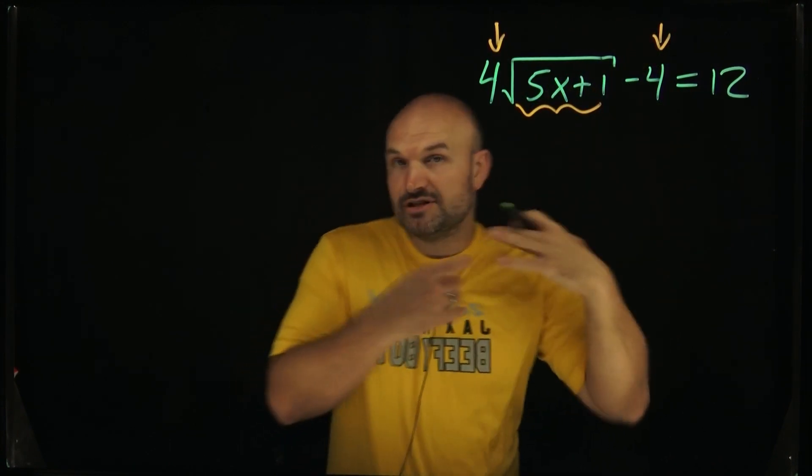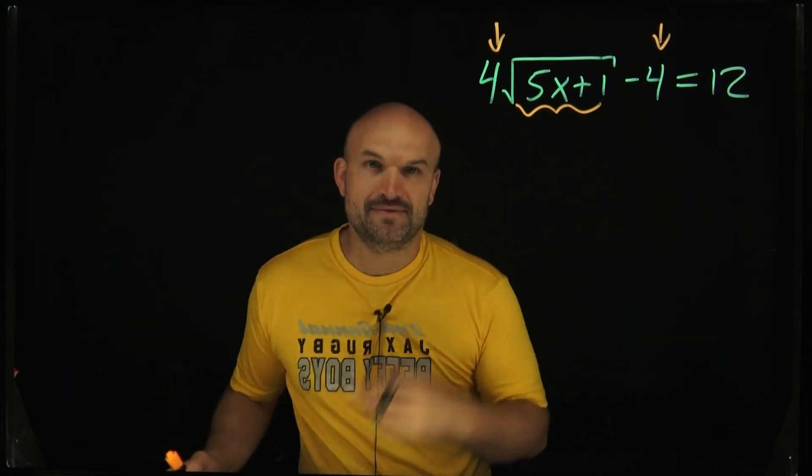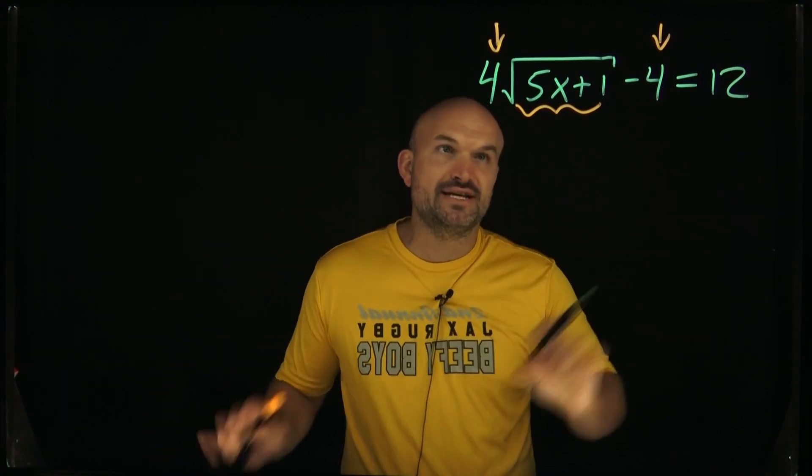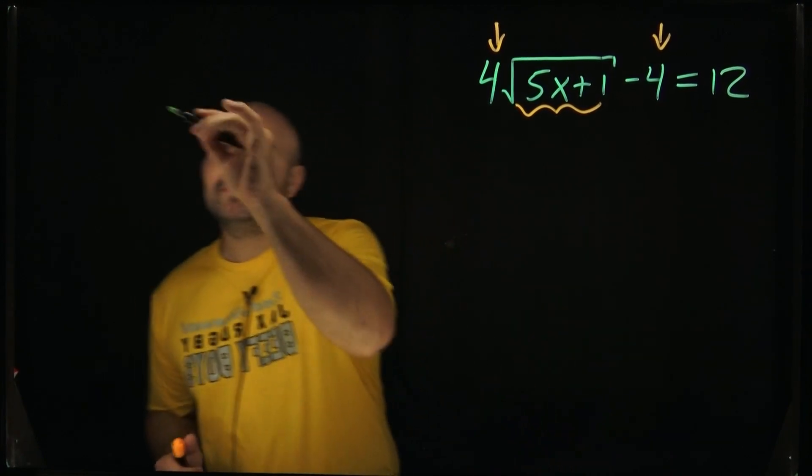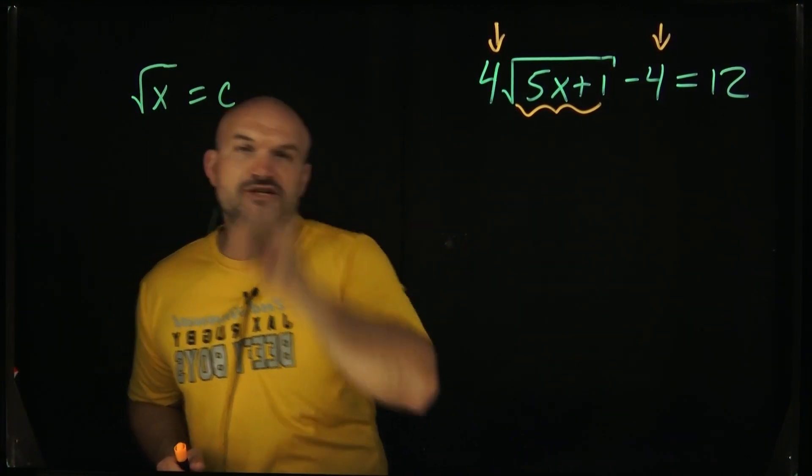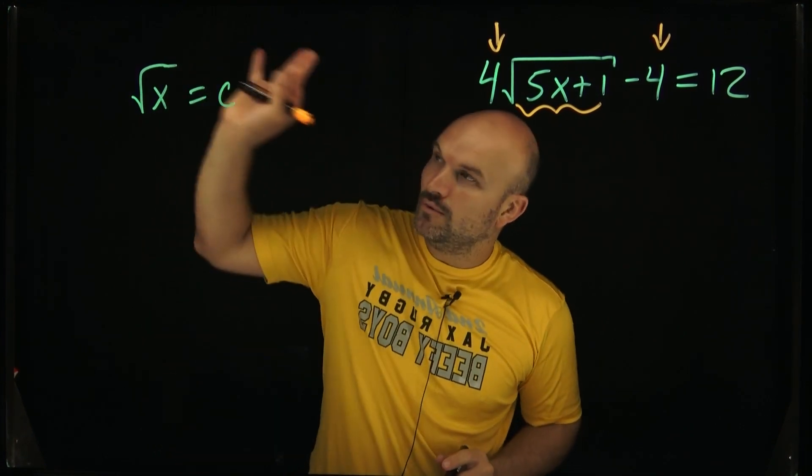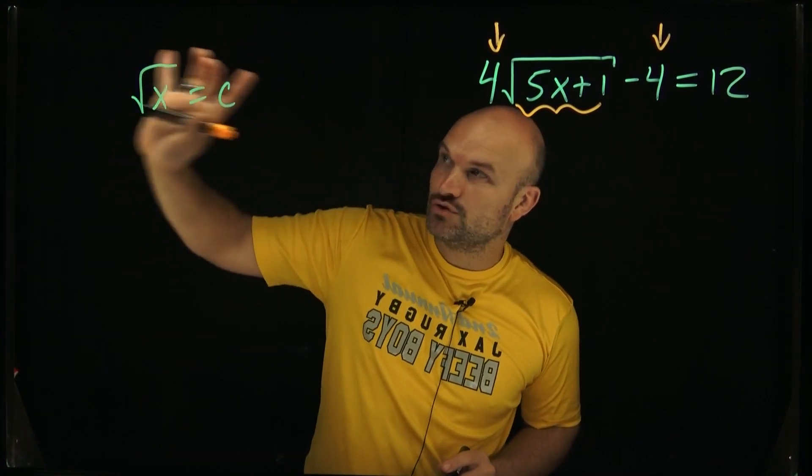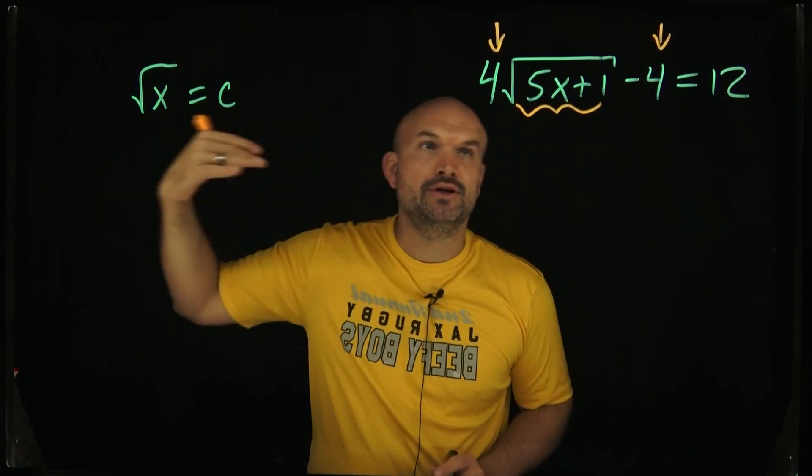So when you're solving square root functions or really any kind of function, the main important thing that we want to do first is isolate the square root. We want this to be square root of whatever equals some number, let's just call that c. So we got to get whatever's under the radical. We want that square root to be isolated so now we can go ahead and solve.